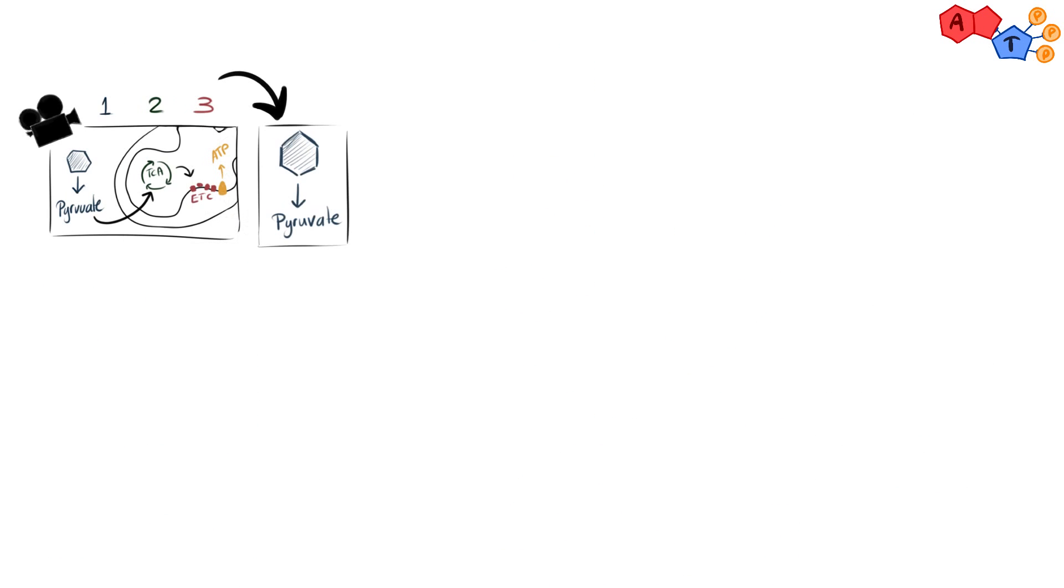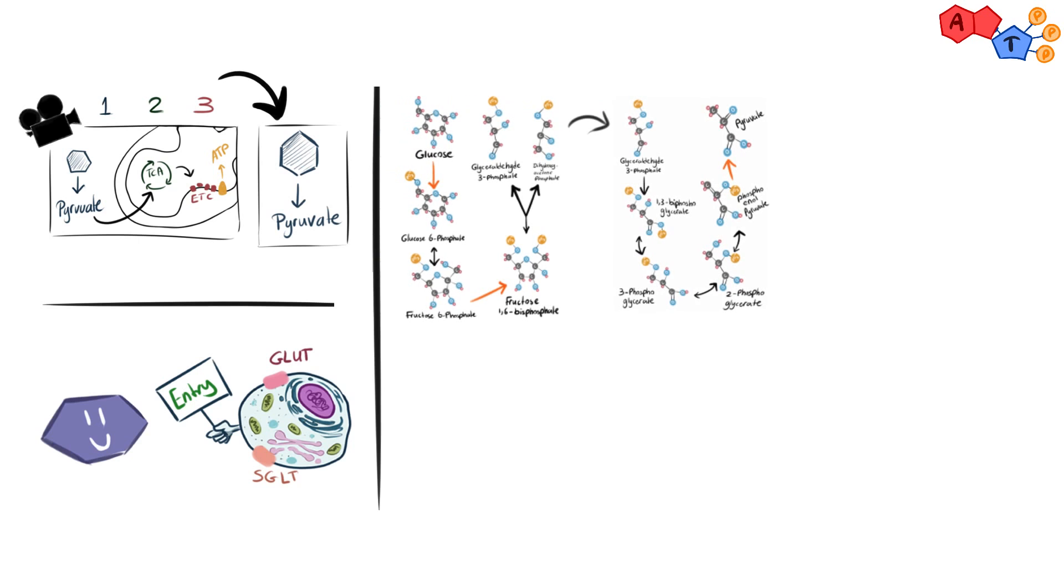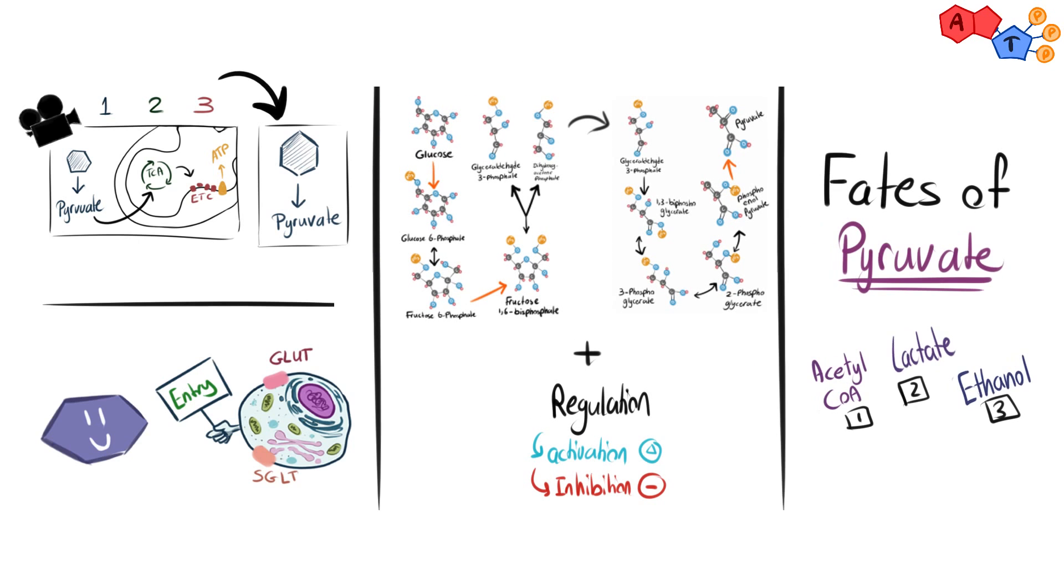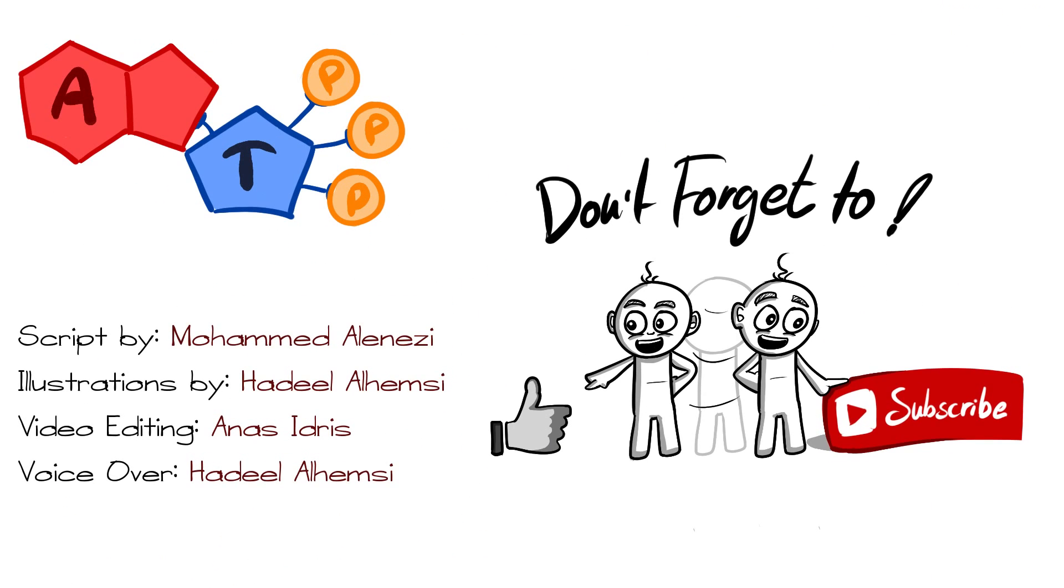So, in this video we talked about glycolysis, the first stage of cellular respiration. We discussed the different transport systems by which glucose enters the cell, we saw the reactions that glycolysis consists of and how they are regulated, and finally the fates of pyruvate at the end of glycolysis. Thank you for watching, we hope it helped you understand glycolysis better. Make sure to subscribe to our channel, like this video, and leave feedback or questions in the comment section below.